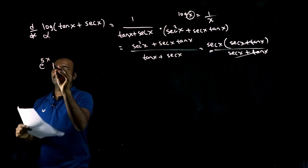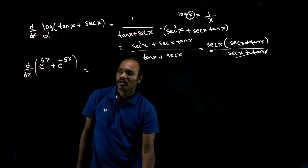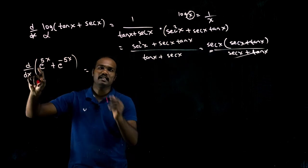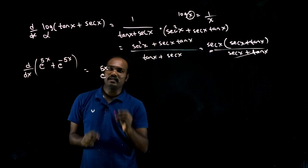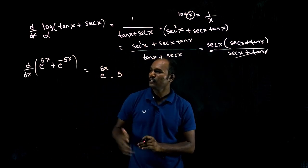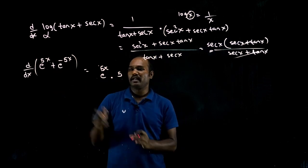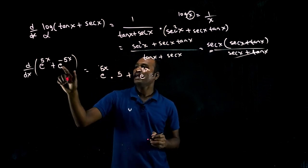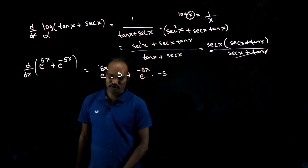We have e^(5x) + e^(-5x). We have to find d/dx of this. Differentiate each term: e^(5x) differentiation is e^(5x) times 5x differentiation, which is 5. And e^(-5x) differentiation is e^(-5x) times minus 5x differentiation, which is minus 5.